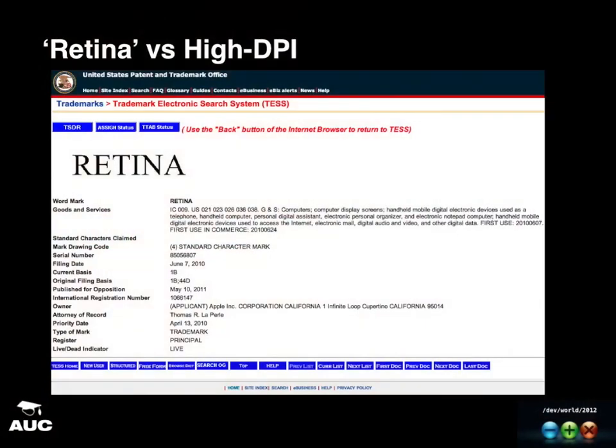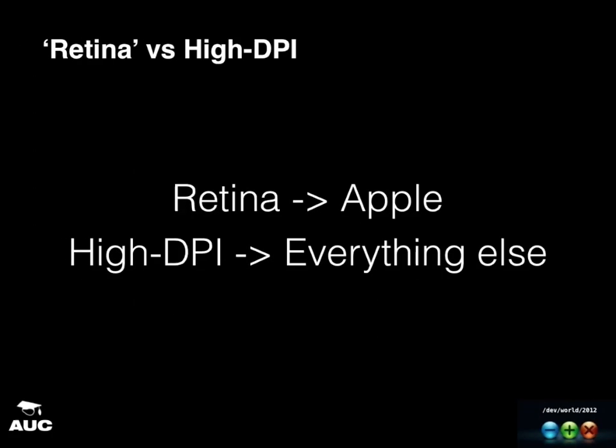Just to clarify: 'retina' is Apple's actual branding and marketing term for high DPI displays — used specifically for their marketing purposes. The catchphrase is that a retina display is a device where the pixels are so small your human retinas can't distinguish them. I heard from app developers — and confirmed in the trademark office — that 'retina' is actually a trademark term by Apple in relation to computer displays. Interestingly, that trademark went through just before the iPhone 4 was announced, so they were working on it for a while. High DPI is what everyone else calls it.